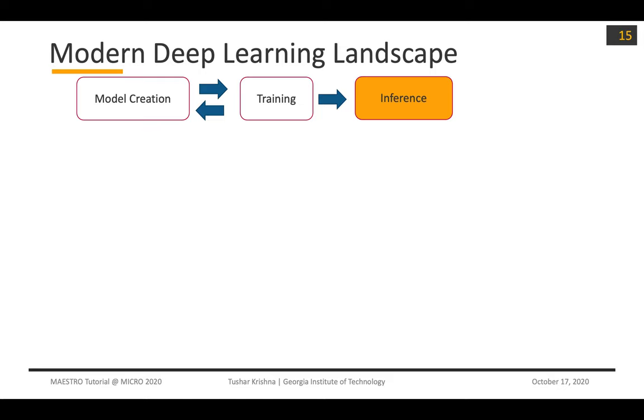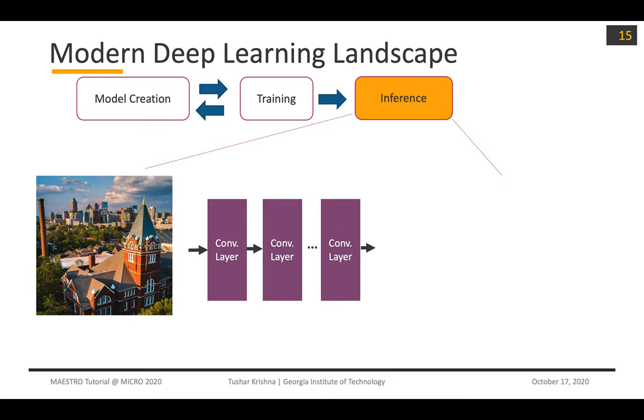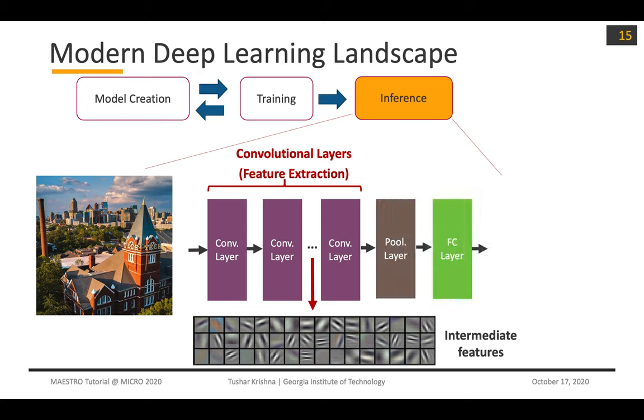In terms of the modern deep learning landscape, if you look at the inference process, suppose I give an image to a large neural network, which might consist of a bunch of layers made up of the neurons I just talked about. You might have convolutional layers that extract certain features, then some layers to summarize these features. If you've trained your network well, it'll identify that this image is actually the Georgia Institute of Technology in Atlanta.